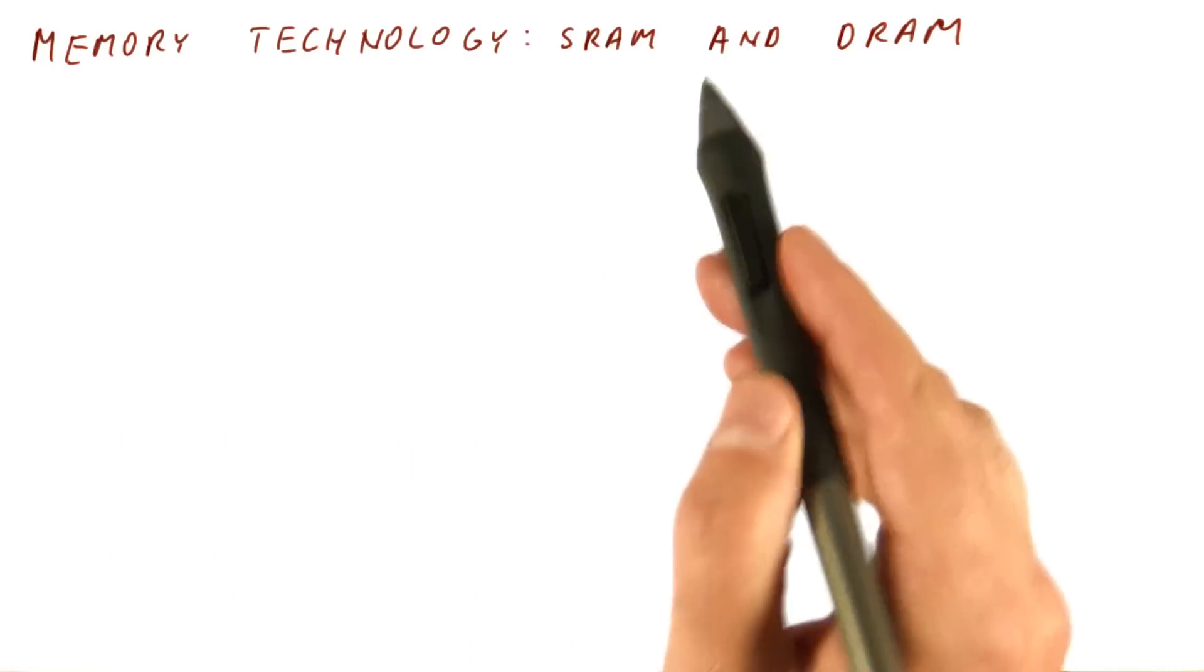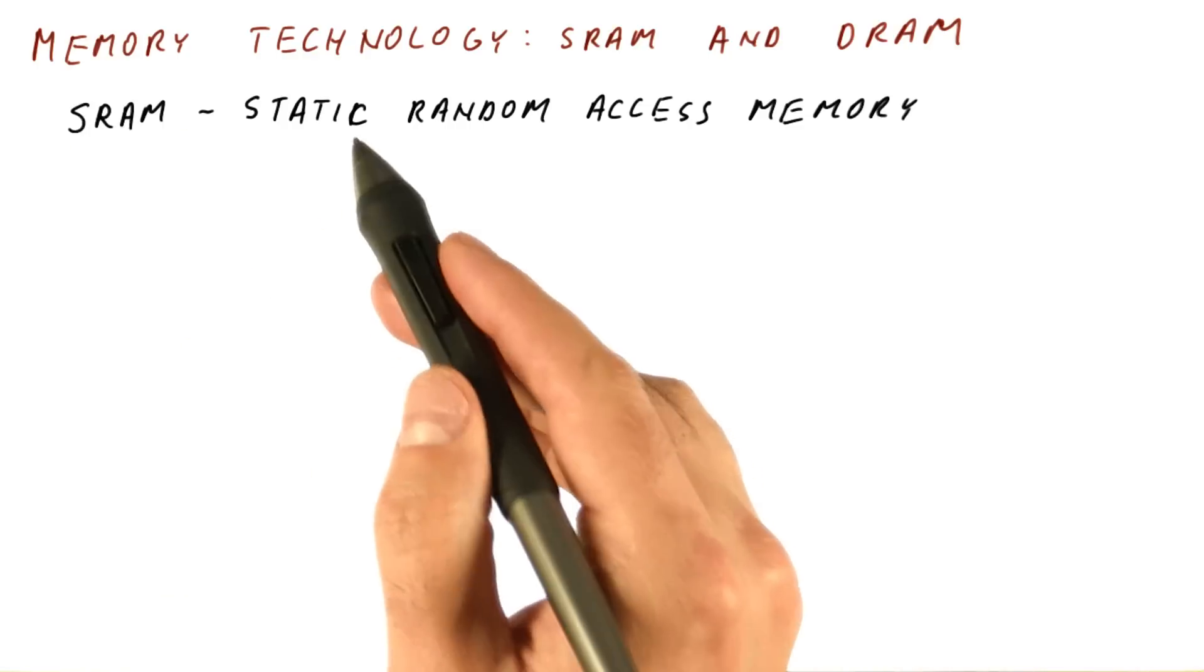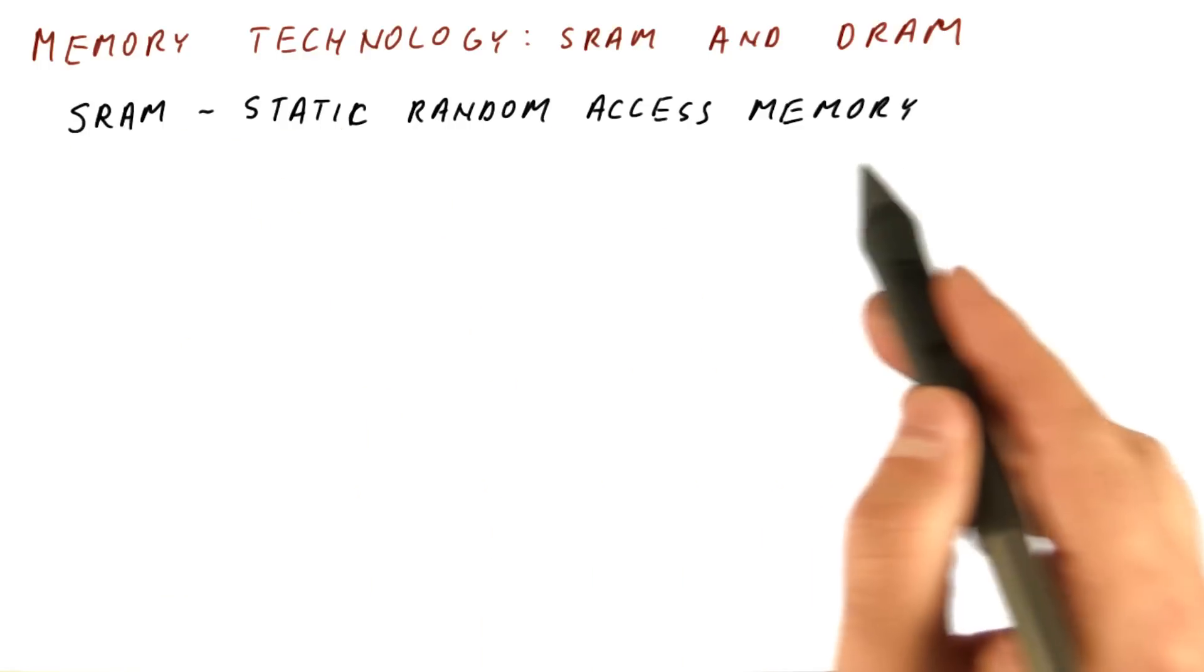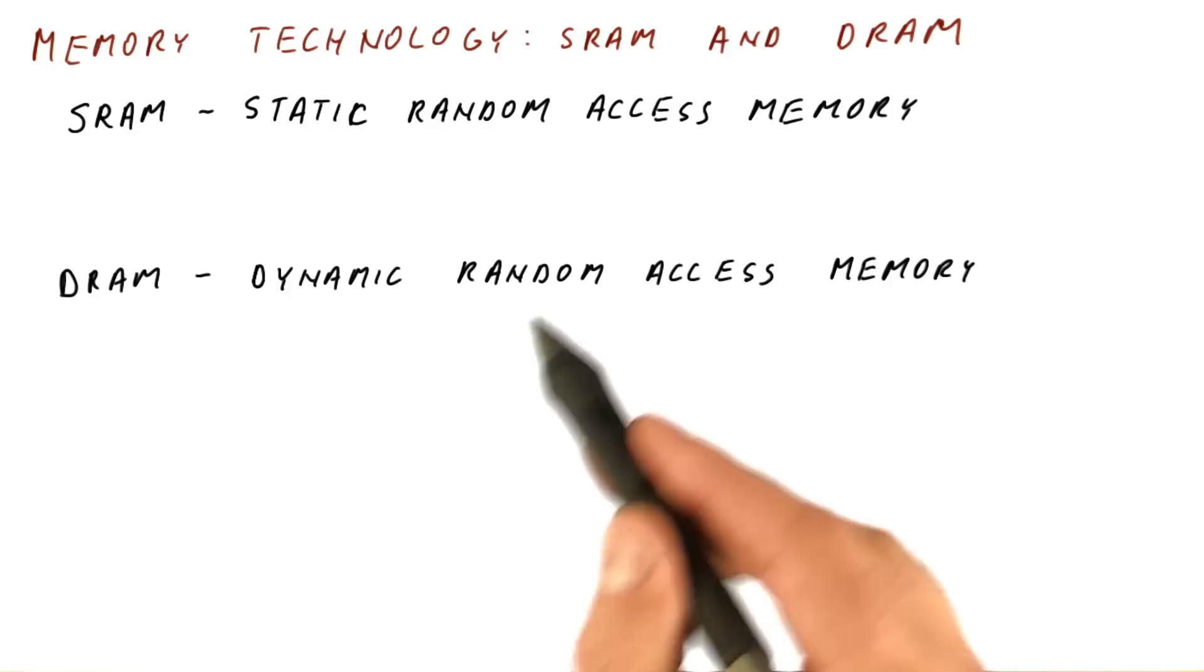There are two memory technologies: SRAM and DRAM. SRAM stands for Static Random Access Memory. DRAM stands for Dynamic Random Access Memory.